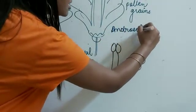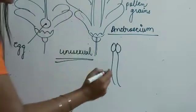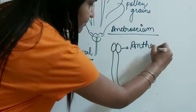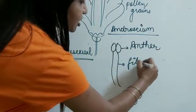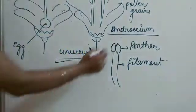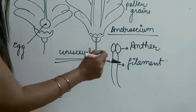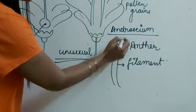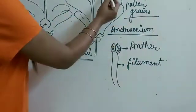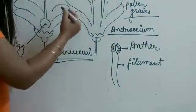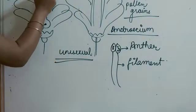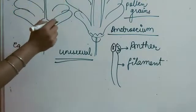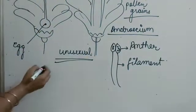In the androecium, the structures present are the anther and the filament. The anther is at the top and the filament supports it. The anther produces pollen grains. The pollen grains are the male reproductive units of the flower — equivalent to the sperm in animals. These pollen grains need to reach the female part.